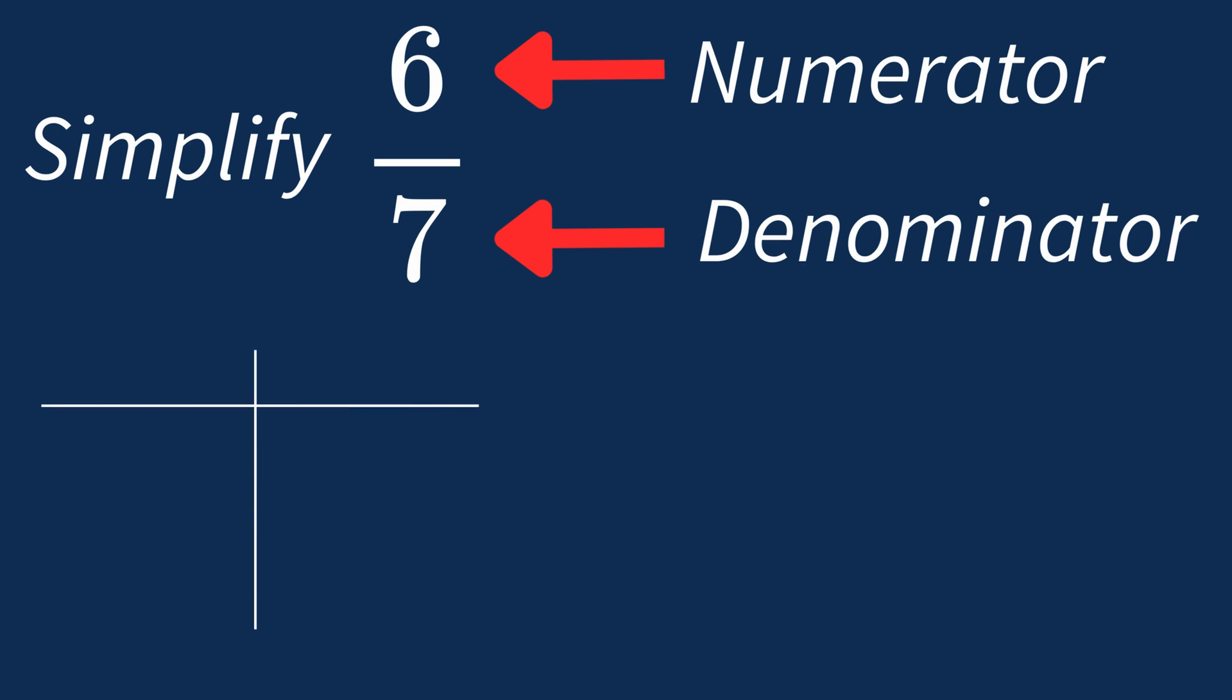First, let's list out the factors for each. For 6, the factors are 1, 2, 3, and 6.